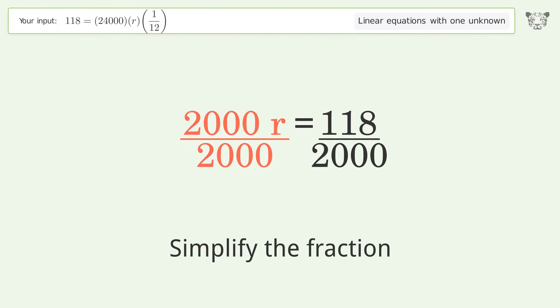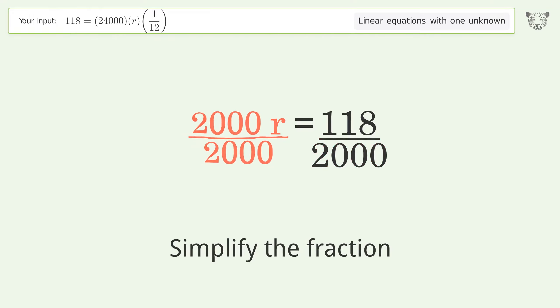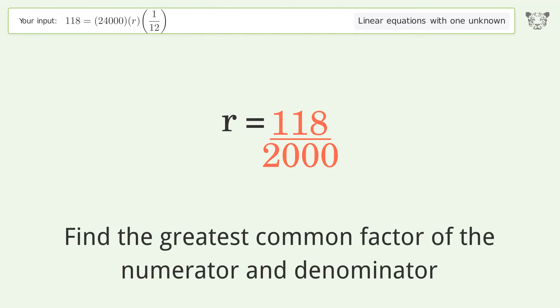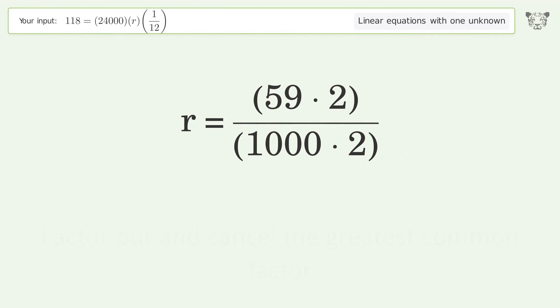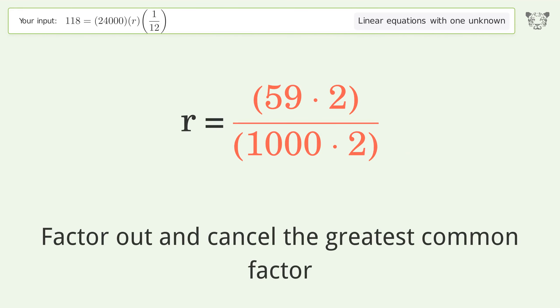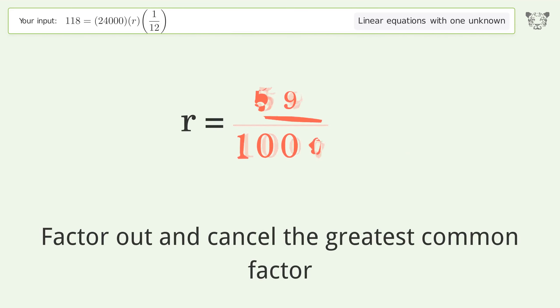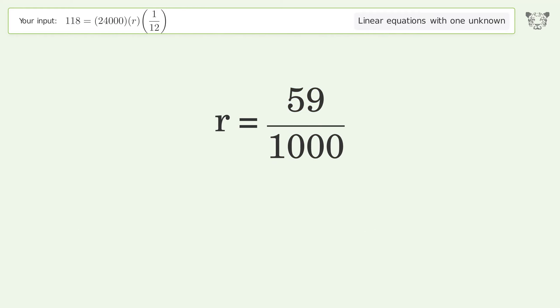Simplify the fraction. Find the greatest common factor of the numerator and denominator. Factor out and cancel the greatest common factor. And so the final result is r equals 59 over 1000.